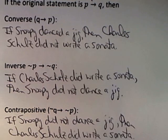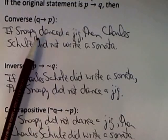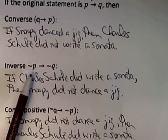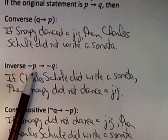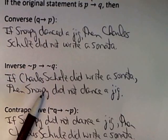Of course, instead of saying 'did write a sonata,' you could say 'Charles Schulz wrote a sonata' — that would be okay as well. So to summarize: the converse switches P and Q, the inverse negates P and Q, and the contrapositive switches and negates.